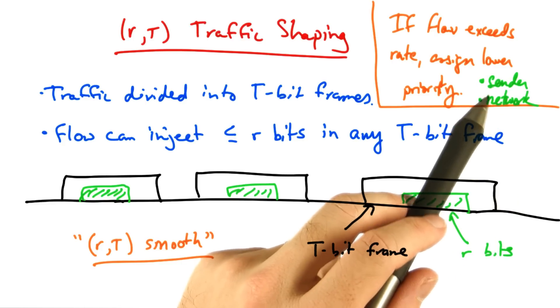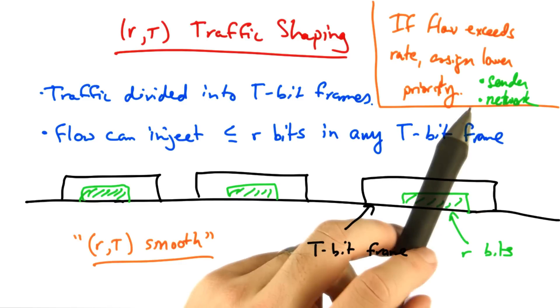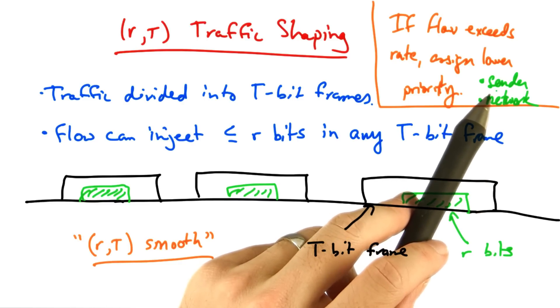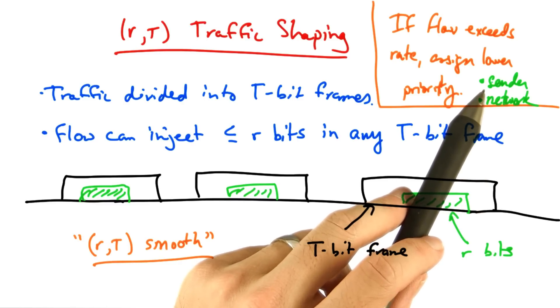Priorities might be assigned at the sender or at the network. At the sender, the application may mark its own packets, since the application knows best which packets may be less important.